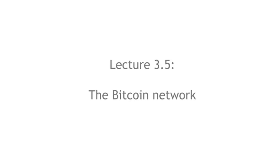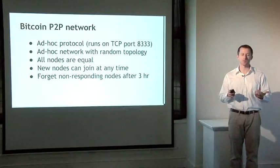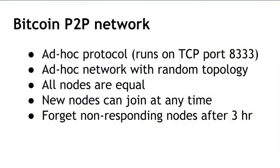We've been talking about the ability for participants to publish a transaction and get it into the blockchain as if this happens by magic. Of course it doesn't happen by magic in the real world — it happens through the Bitcoin network. The Bitcoin network is a peer-to-peer network where all nodes are equal. There's no hierarchy, no centralized special nodes, no master nodes. Every node on Bitcoin is an equal peer.